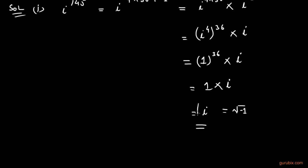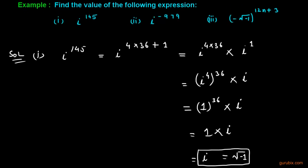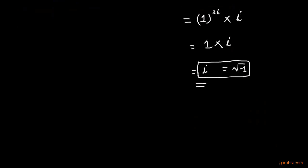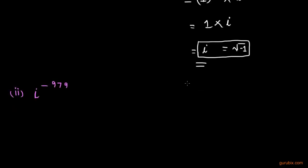This is the solution of part 1 and now we shall move to the second part. In the second part, we are given the expression iota raised to negative 979.